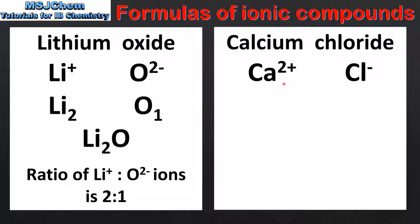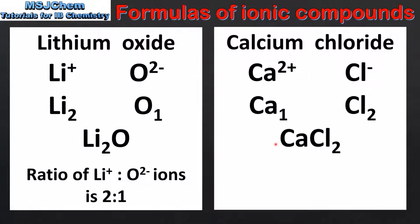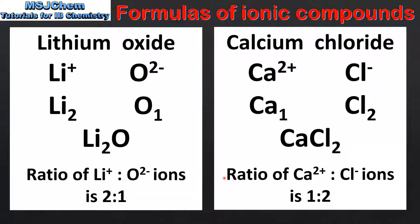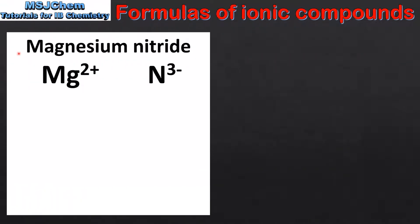The next example is calcium chloride, composed of calcium ions and chloride ions. Using the crossover method, we take the 2 from the cation and write it as a subscript for the anion, and the 1 for the anion is written as a subscript for the cation. We then write it as a formula which is CaCl₂. Just like the previous example, if we have a subscript of 1 we don't write it in the final formula. The ratio of calcium to chloride ions in a formula unit is 1 to 2.